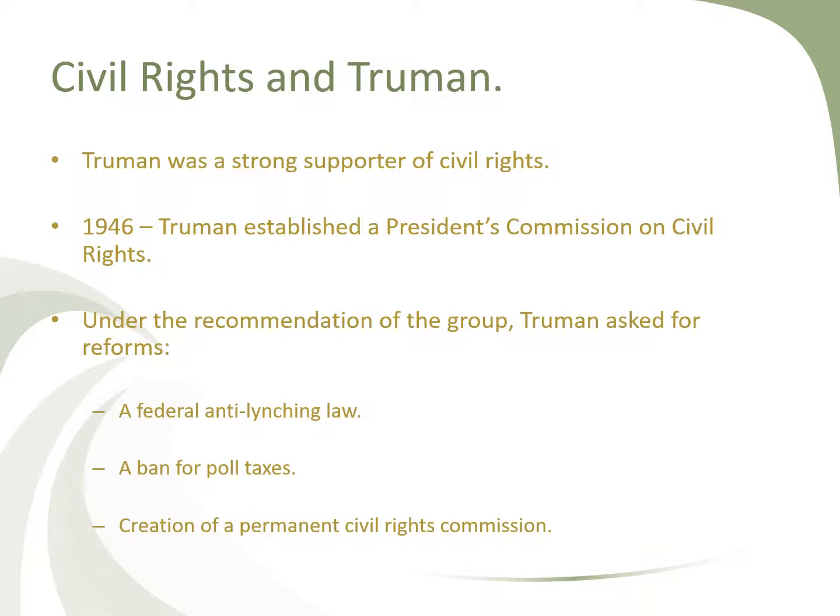Truman was also a strong supporter of civil rights. In 1946, President Truman established a President's Commission on Civil Rights. Under the recommendation of the group, Truman asked for certain reforms: a federal anti-lynching law, a ban on poll taxes — which required African Americans to pay a fee to vote — and a creation of a permanent civil rights commission. Many African Americans were unable to pay the poll tax and so were not able to vote, which is illegal. Southern governments were finding ways to prevent African Americans from voting through discrimination.